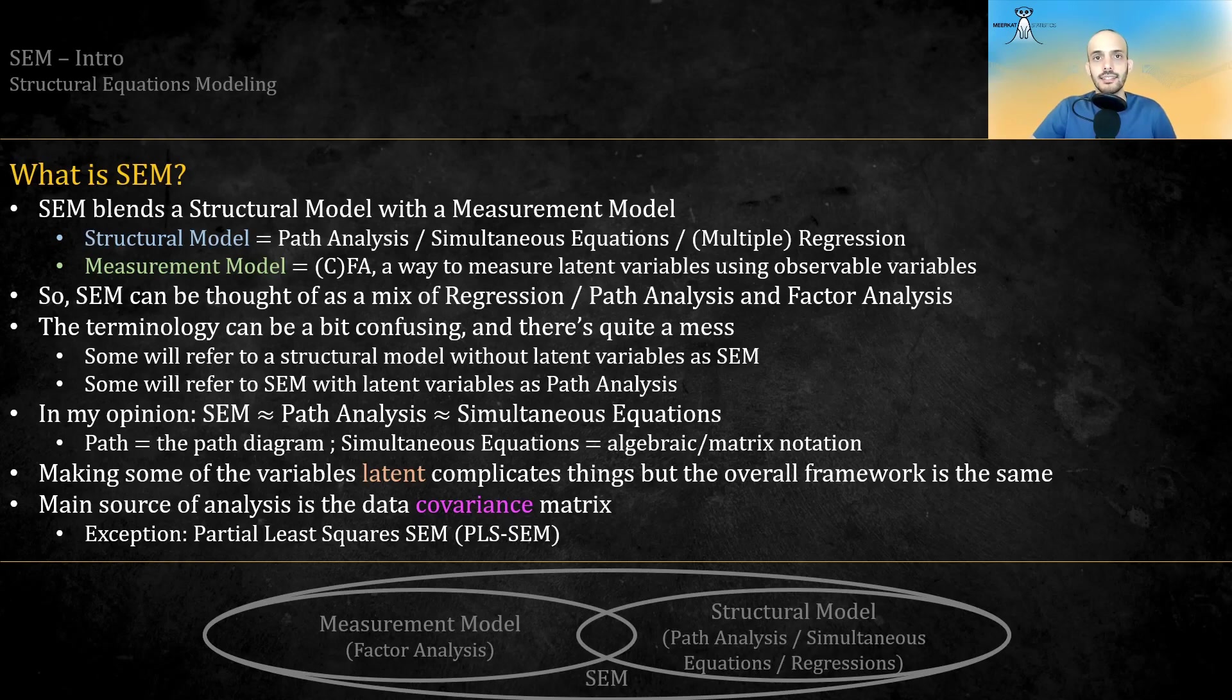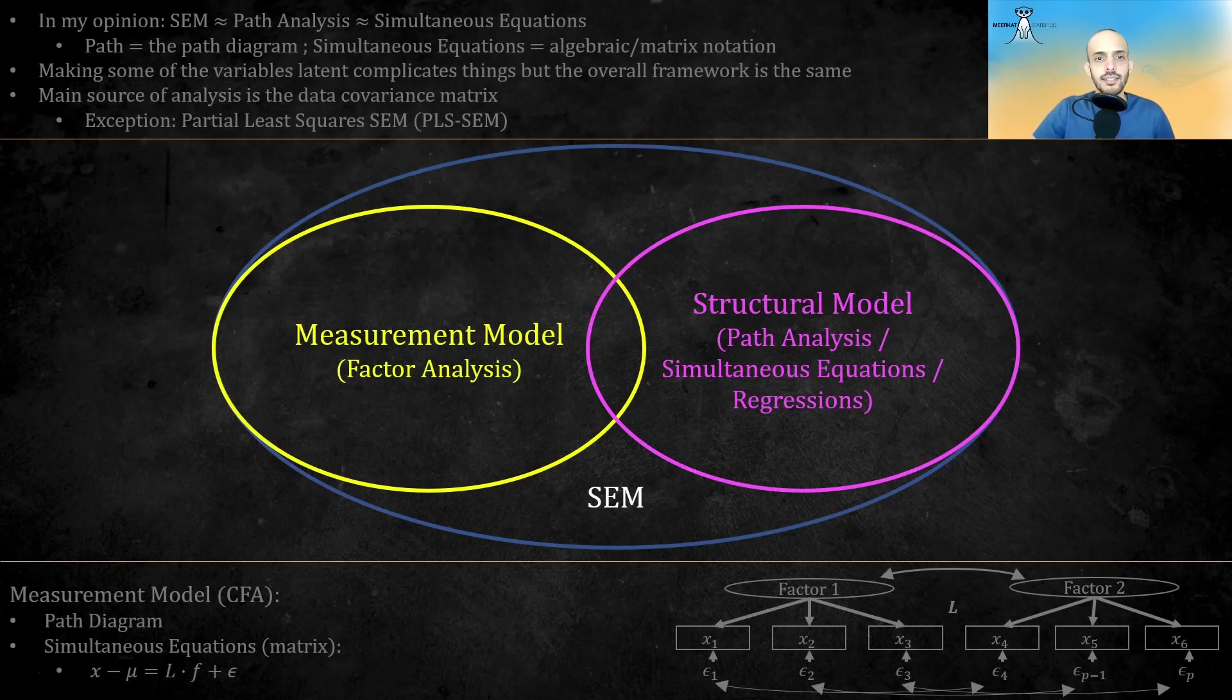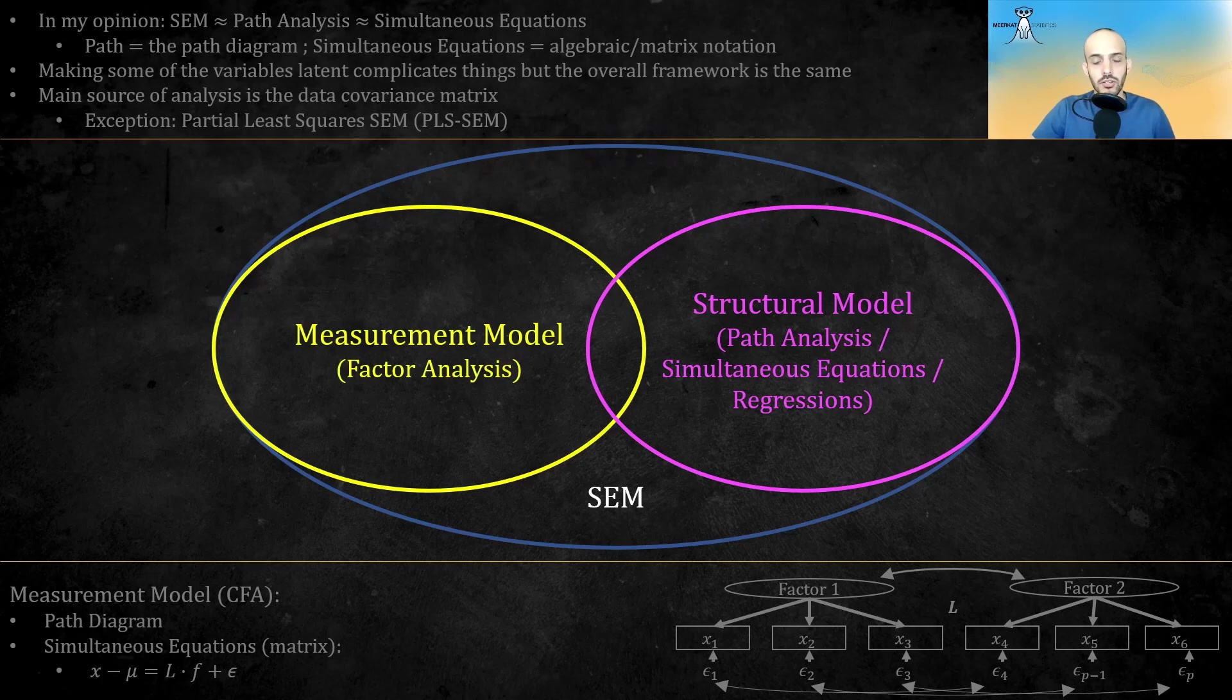Now, the main source of analysis in SEM is the data covariance matrix, with one exception, which I won't go into in this video, which is partial least squares SEM, or PLS SEM. Here's a diagram showing the two main components of SEM, a measurement model, basically CFA, and a structural model, basically extended multiple regression.